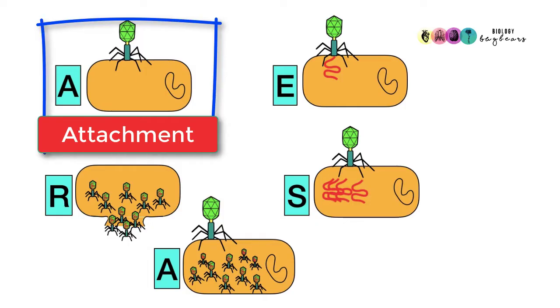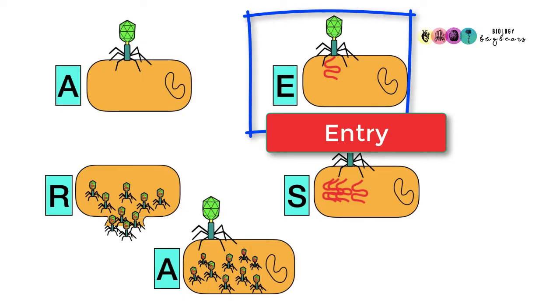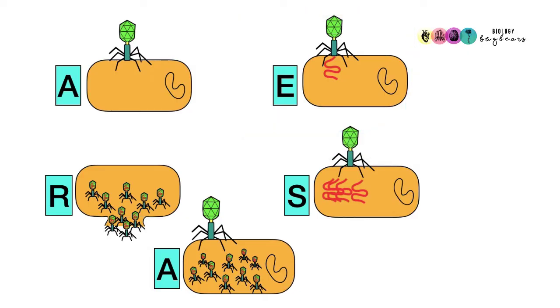Step one: the virus attaches onto the outer surface or membrane of the bacterium or cell it's trying to infect. Step two is entry. In the case of a bacteriophage, only the nucleic acid is injected or enters into the host cell. But in other viruses, sometimes the whole capsid—the whole virus—goes into the host cell and the capsid is broken down, releasing the nucleic acid.